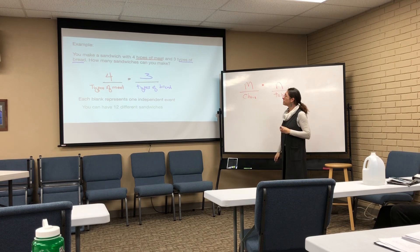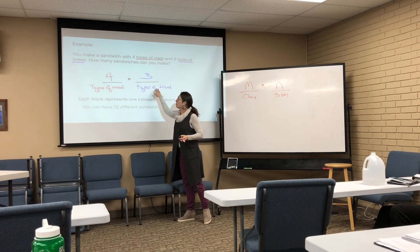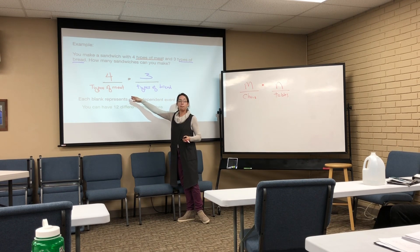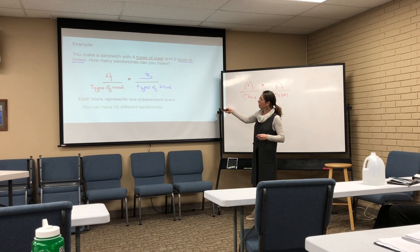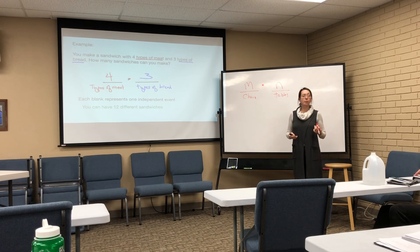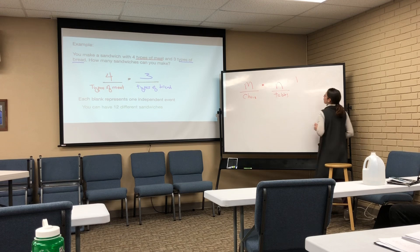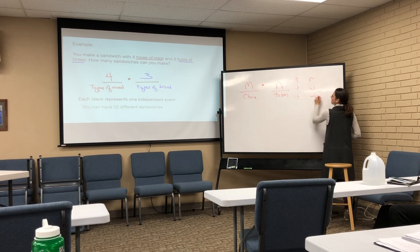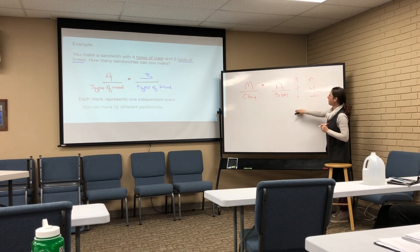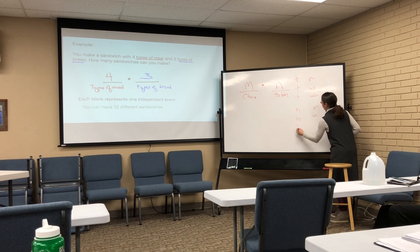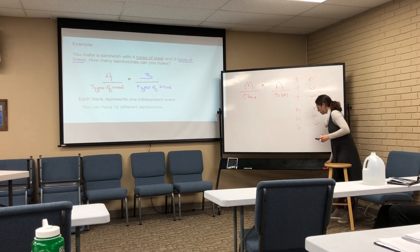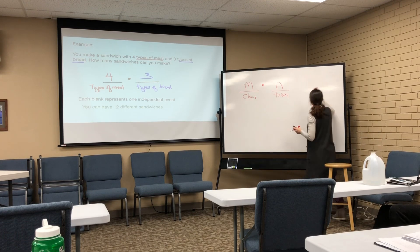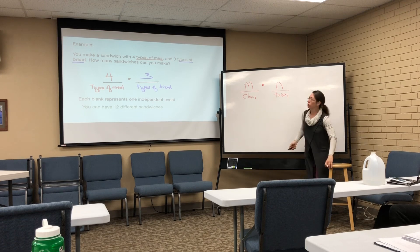You make a sandwich with four types of meat and three types of bread. Our first event is meat — four options. Our second is bread — three options. So we would have 12 separate choices. In a tree diagram, you might have turkey with rye, turkey with white, turkey with wheat, then ham with rye, ham with white, ham with wheat — listing them all out gives us 12 separate options. I like using the blanks and labeling them underneath so I know what I'm working with.